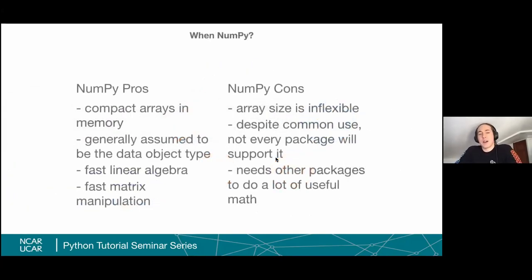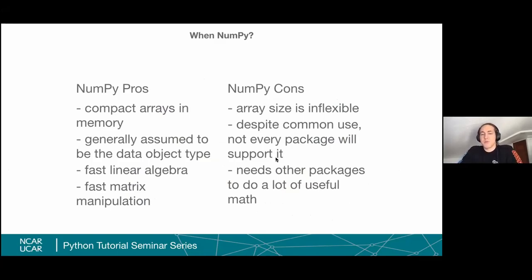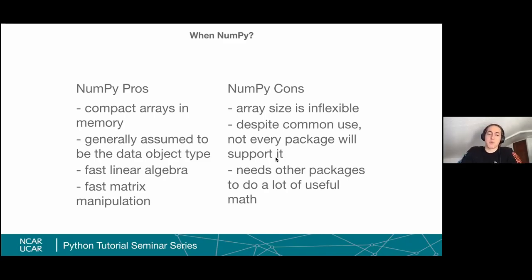When to use NumPy: its pros are very compact arrays in memory, just allocated bit by bit. So an array of 10 items uses exactly the amount of memory those 10 items contain. It's really good for numeric arrays and is generally assumed as a data object type for pandas, xarray, or dask. NumPy arrays are often stored in memory in Fortran or C style, which means you can use NumPy's built-in LAPACK and BLAS libraries for very fast linear algebra and matrix manipulation.